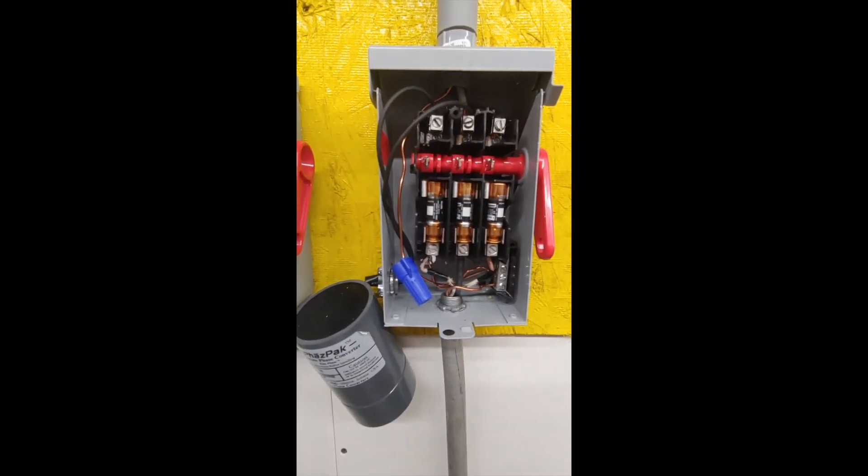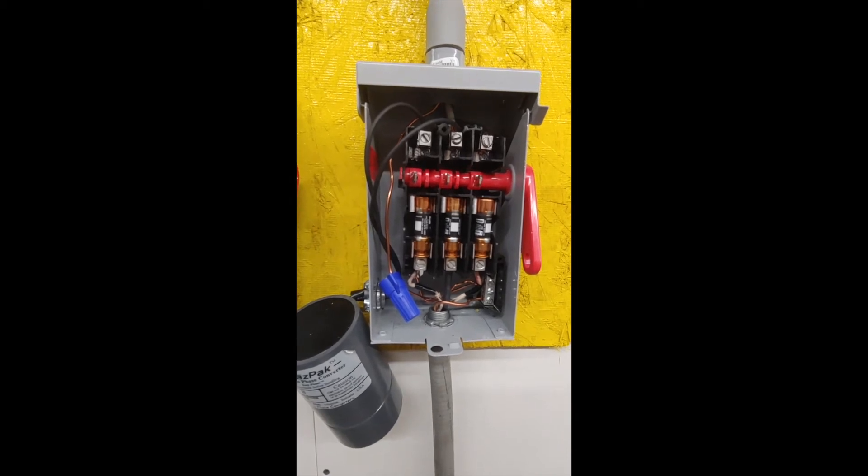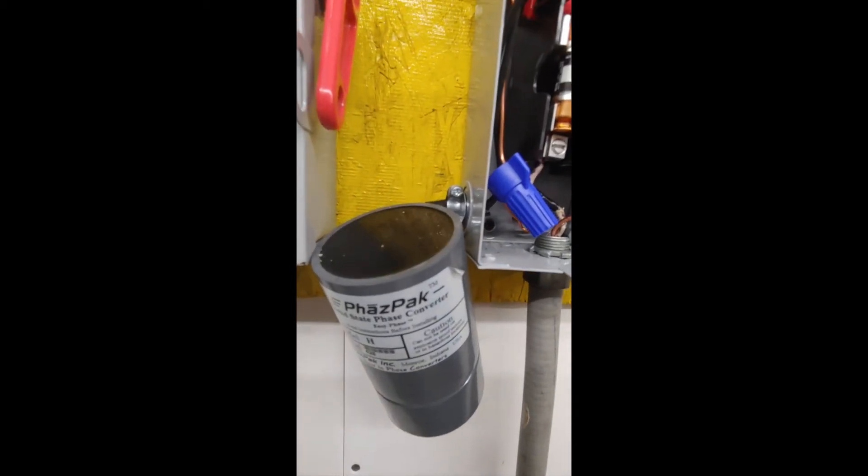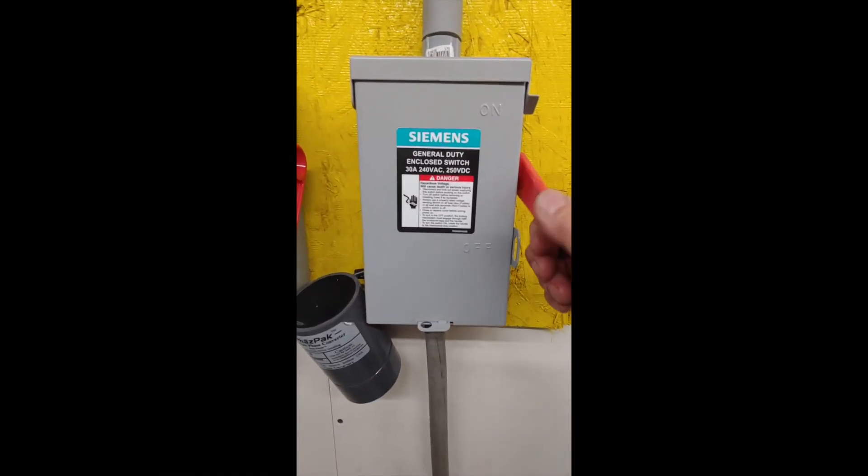But so that's it. Make sure that your control wires are connected through to the breaker. Add this guy in and it runs. I put the lid on, connect to the breaker. So this is my disconnect.